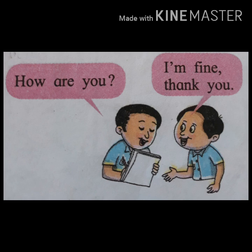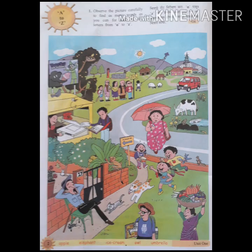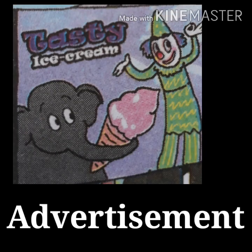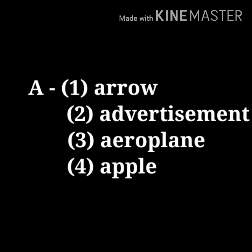Do these activities at home and try to speak in English. Our next topic is A to Z. I will show you one picture — there are many things shown in it. You have to guess their names and try to find as many words as you can starting with each alphabet. Starting with alphabet A: aero, advertisement, aeroplane, apple. You should write these words in your notebook.